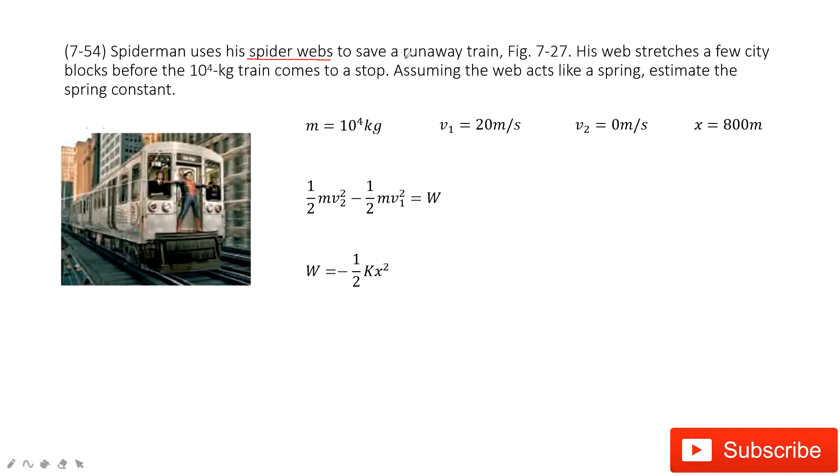The problem is to save a runaway train. The web moves a few city blocks before the train comes to a stop. I ask you to find the spring constant. How can we do that?